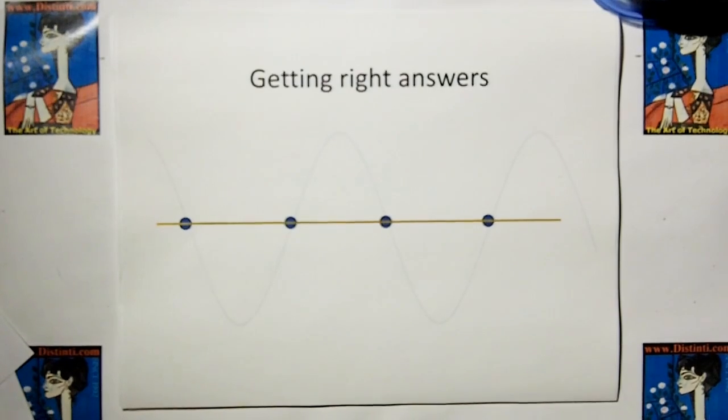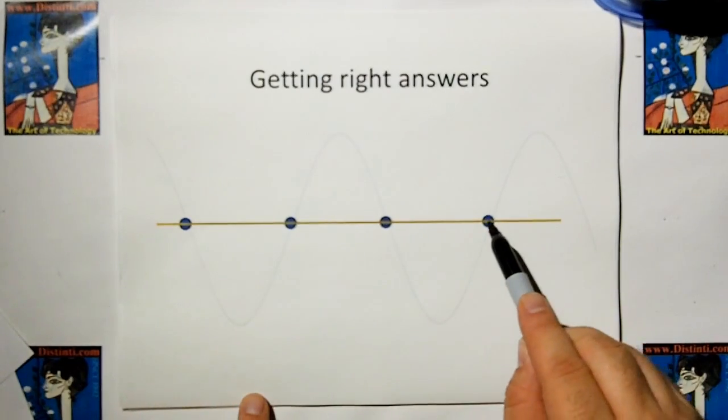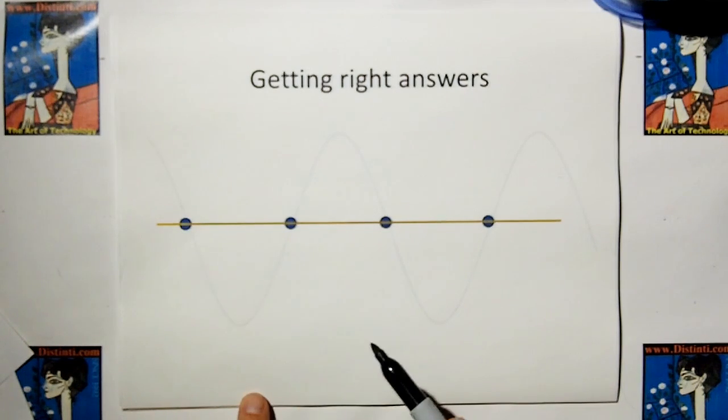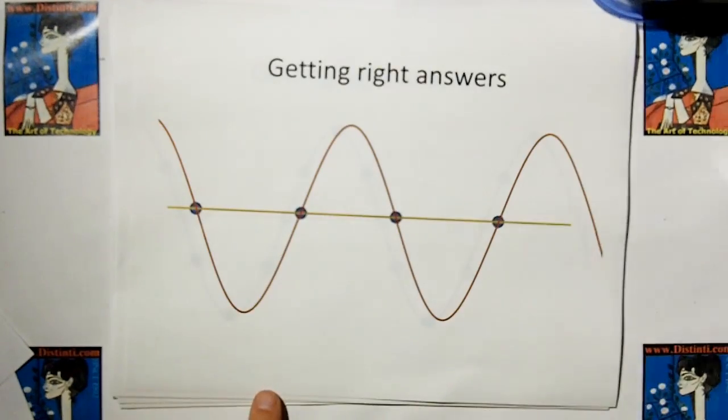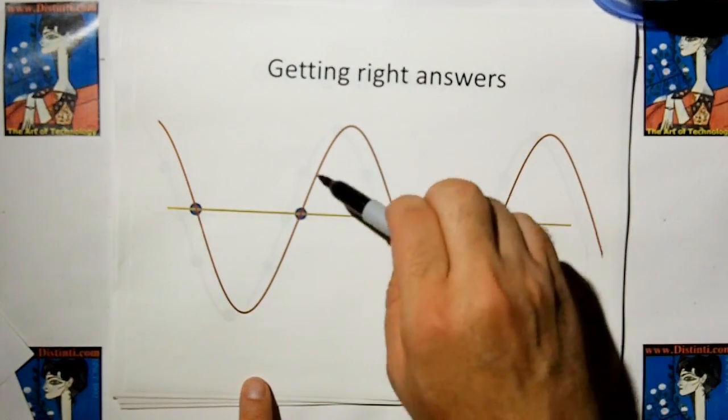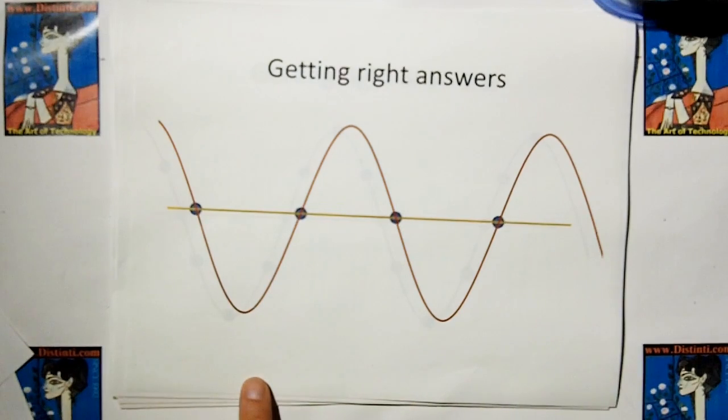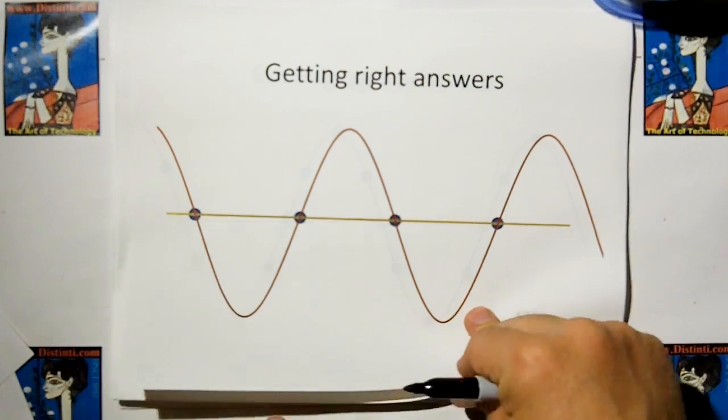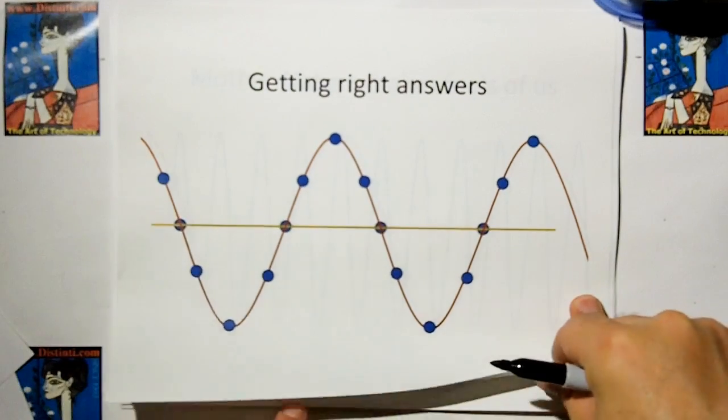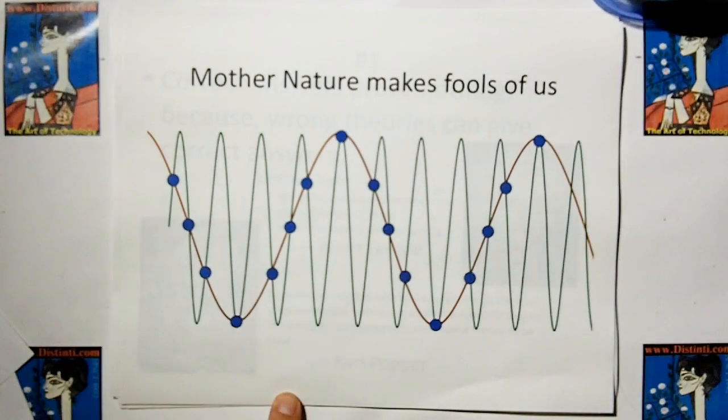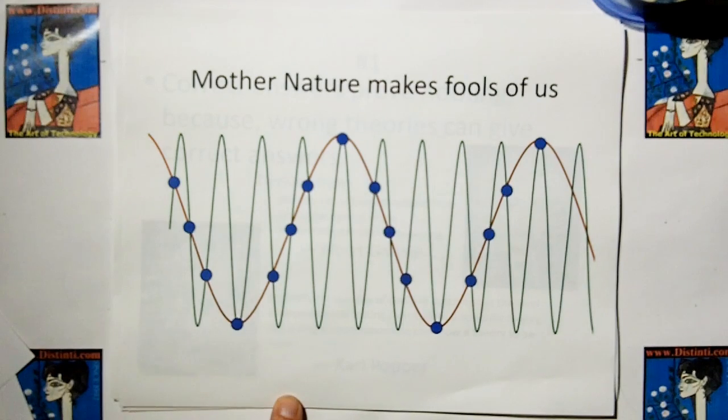Most people are under the false impression that if you have a theory that fits the sample points, your theory must be correct. Well the problem is you can have another theory that might fit the same observations, and there can still be infinite number of theories that fit the same observations.